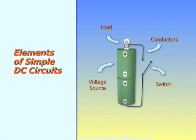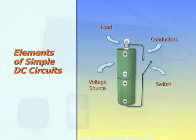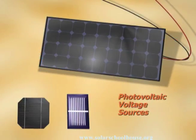From the light bulb, the electricity flows back to the batteries through what's called conductors. In a flashlight, the conductors are metal wires or ribbons. To control the flow of electricity, we use a switch to break or open the circuit. Instead of batteries, we can use solar cells or solar panels to power DC circuits.